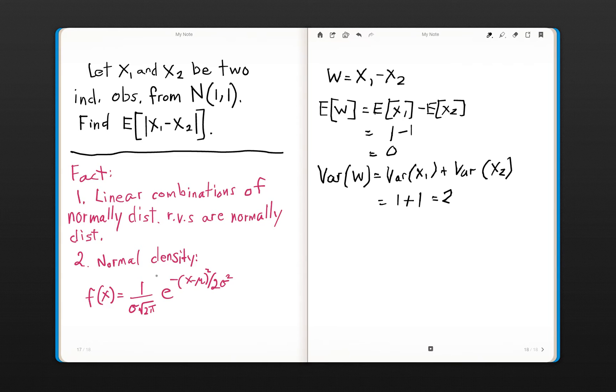So now, using fact 2, since we know it is a normal distribution with mean 0 and variance 2, then we know what f(W) is. So the actual density would be equal to 1 divided by the square root of 2 times the square root of 2 pi, because we're substituting in for sigma. Sigma squared was actually equal to 2.